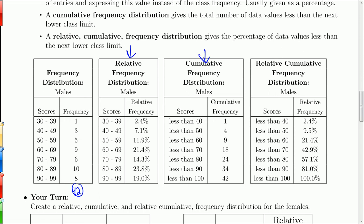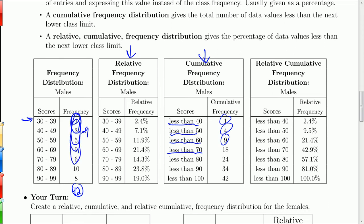You can also do the cumulative frequency distribution, which says how many scores are less than the lower bound of each class. For the first entry, we have one score below 40 — so less than 40, we have 1. Less than 50, we add these two together, giving us 4. Less than 60, we add these up, giving us 9. Less than 70, 80, 90 — add all those up. Less than 100, notice that's the total number — they're all less than 100.